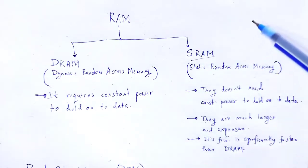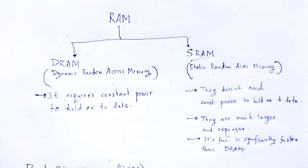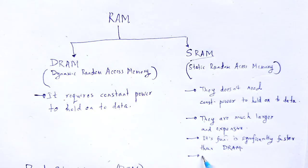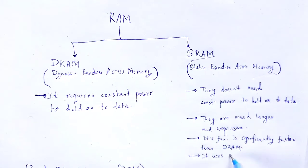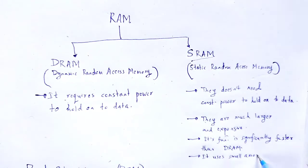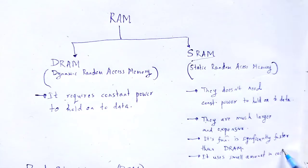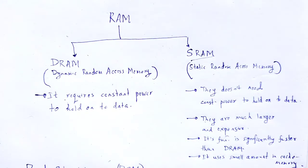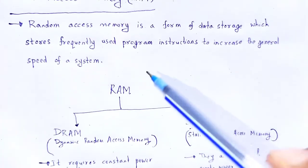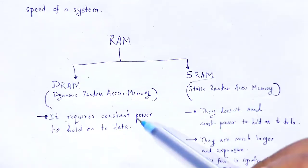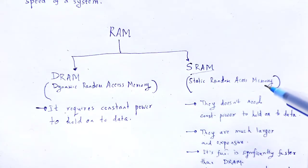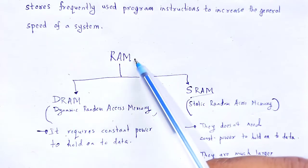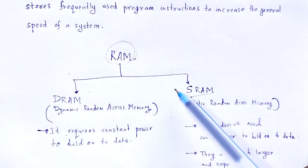SRAM, static random access memory, is mainly used in small amounts as cache memory. These are the basic differences between dynamic random access memory and static random access memory. Here are the two primary types of RAM.